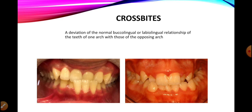Whenever there is any deviation from the normal buccolingual relationship posteriorly or the anterior labiolingual relationship — that is, any deviation in the buccolingual, transverse, or labiolingual dimension — we will be terming it as a crossbite. In the first picture we can see that the lower teeth are overlapping the upper central and lateral incisors, which is a deviation from the normal labiolingual relationship known as an anterior crossbite.